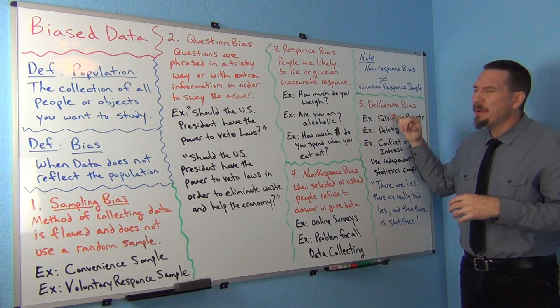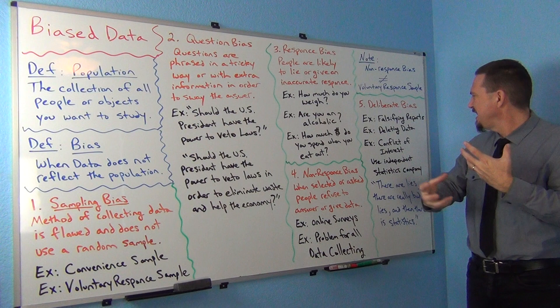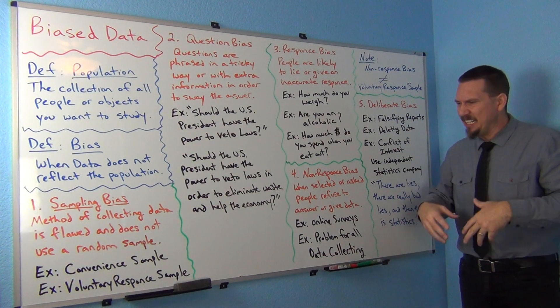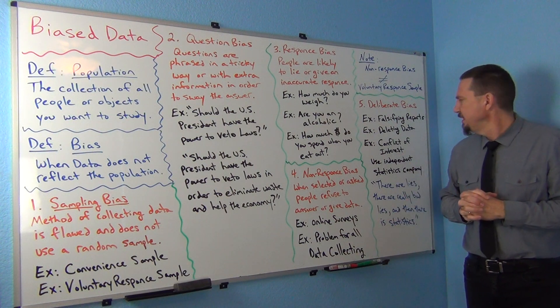So deliberate bias is kind of the shady stuff, the falsifying reports, deleting data, those kinds of things. Also conflict of interest.